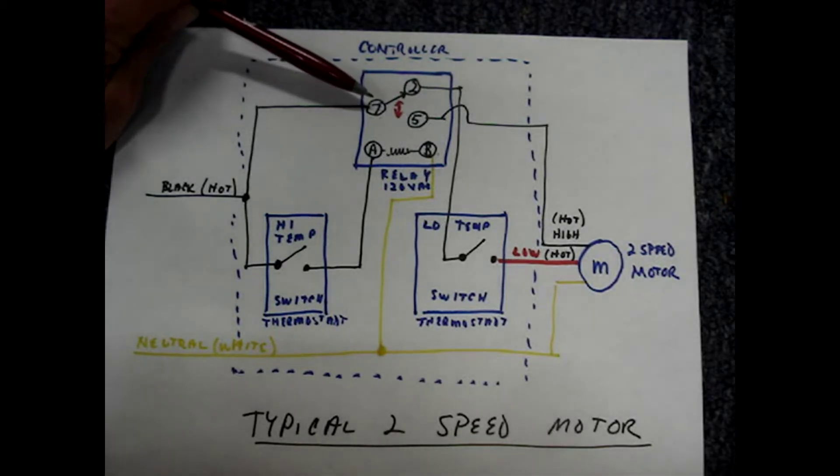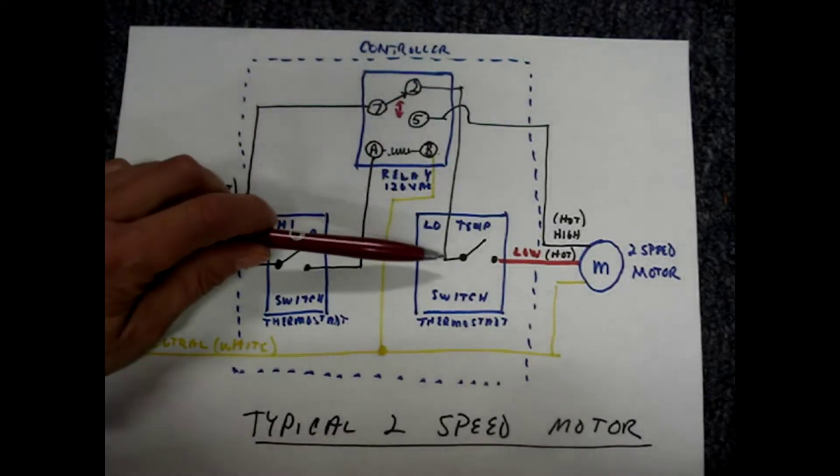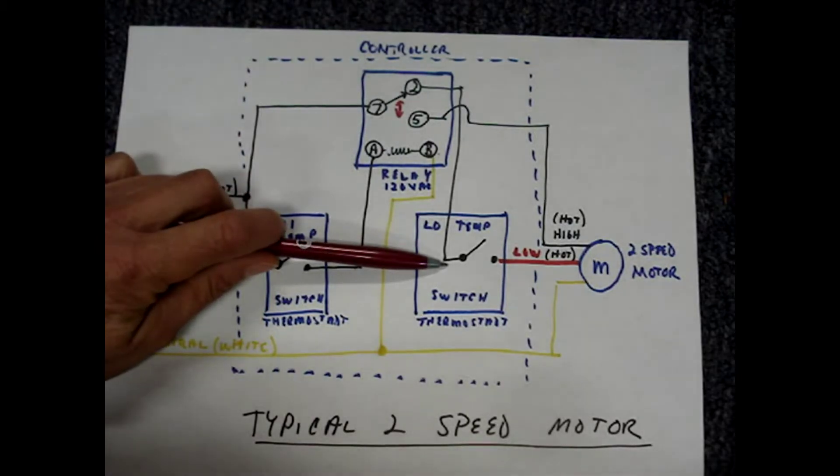When the relay isn't energized, pin 7 and pin 2, those contacts are closed. The hot wire continues to one side of the low temperature switch.